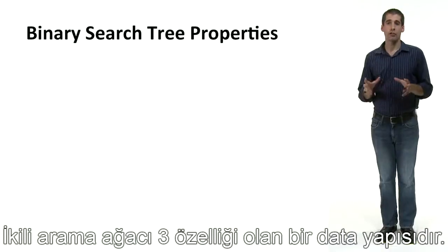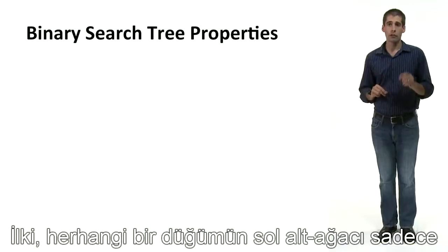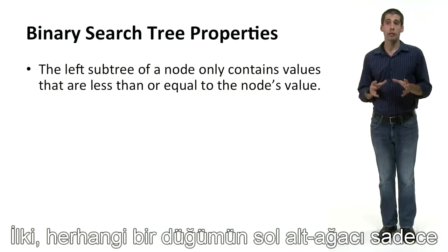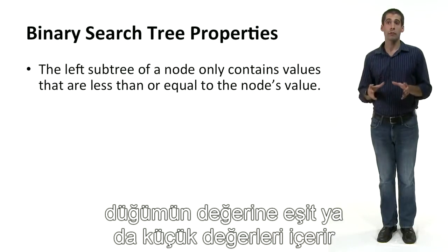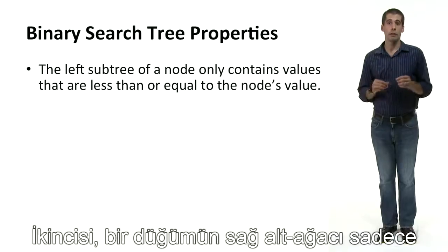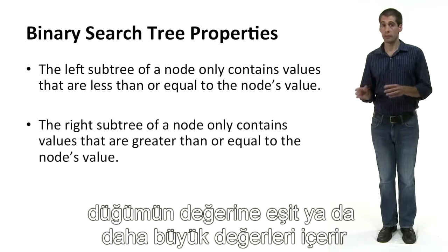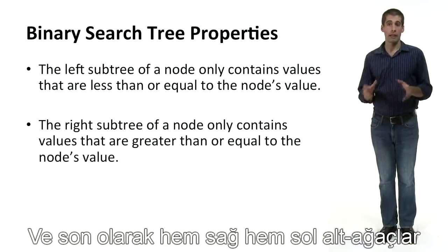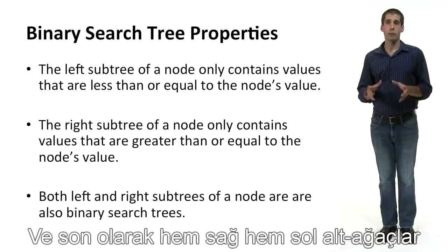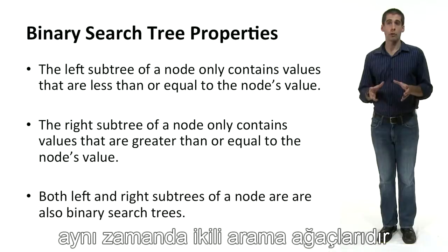A binary search tree is a data structure that has three properties. First, the left subtree of any node contains only values that are less than or equal to the node's value. Second, the right subtree of a node only contains values that are greater than or equal to the node's value. And finally, both the left and right subtrees of all nodes are also binary search trees.